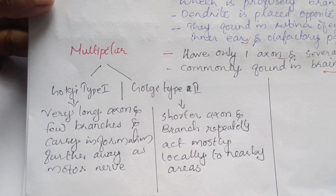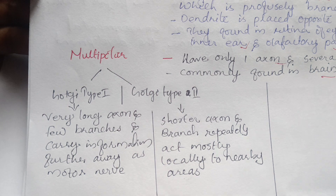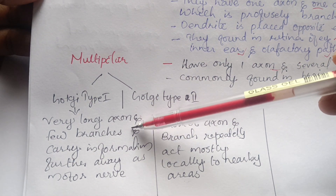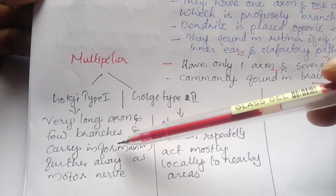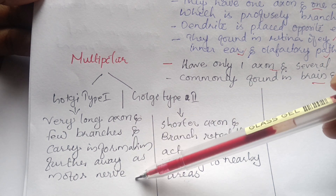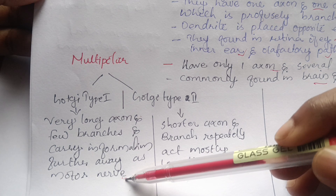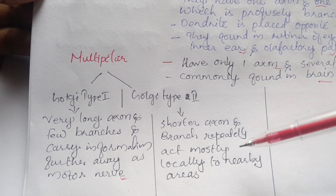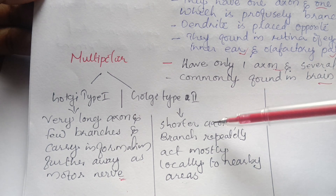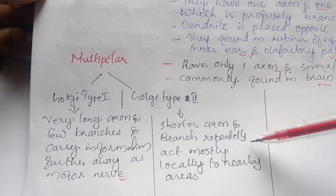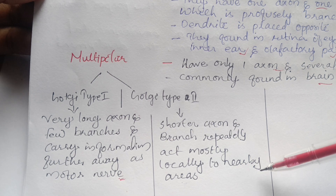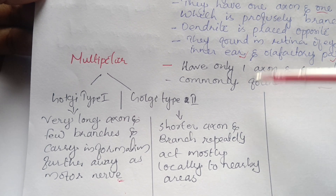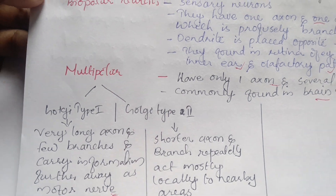Multipolar Neurons are of two named types: Golgi Type 1 and Golgi Type 2. Golgi Type 1 has a very long axon with few branches, used for transmitting information over long distances. Golgi Type 2 has a shorter axon whose branches act locally to nearby areas, functioning as a local neuron.